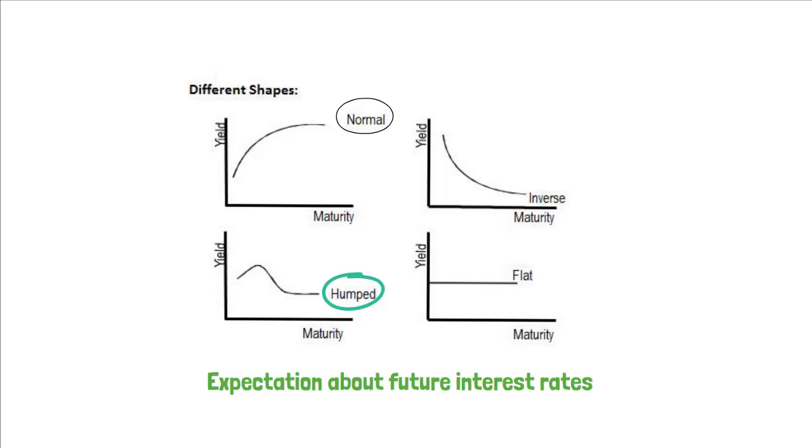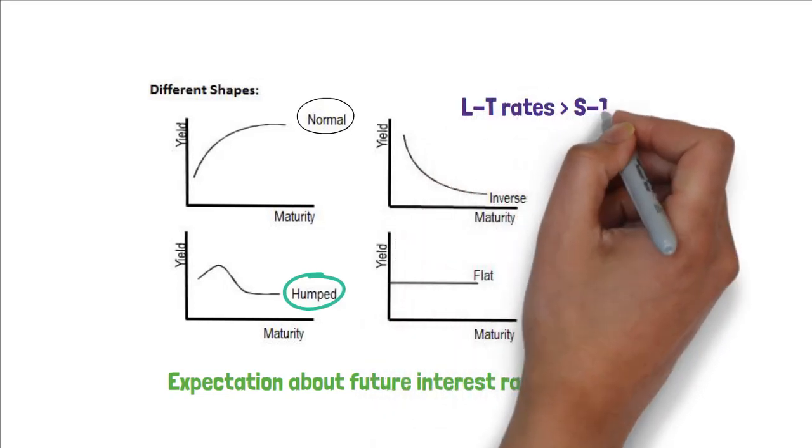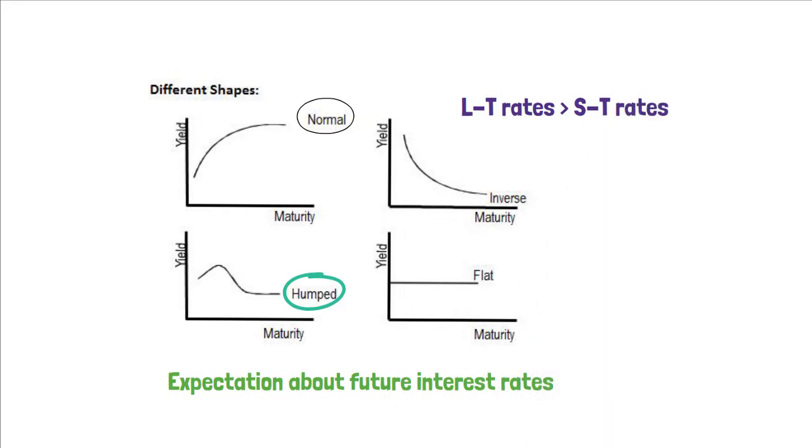Specifically, if interest rates are expected to increase, long-term rates will be higher than short-term rates, and vice versa. Thus, the yield curve can slope up, down, or even bow.